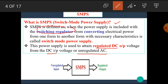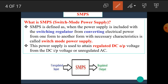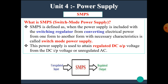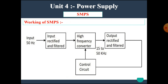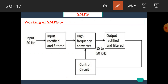This power supply is used to attain regulated DC output voltage from DC input voltage or unregulated AC voltage. The input of the SMPS may be unregulated — that means AC or pulsated DC. The output of this SMPS is in regulated form, meaning it is a constant value. Now let's see the basic block diagram of the SMPS.